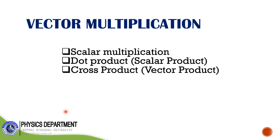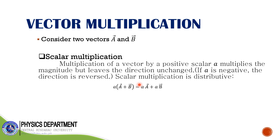Now let's go to vector multiplications. There are three: we have the scalar multiplication, the dot product (also called scalar product), and the cross product. For scalar multiplication, multiplying a vector by a positive scalar a simply multiplies the magnitude but leaves the direction unchanged. If a is negative, then the direction is reversed.